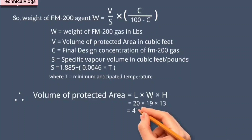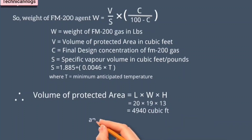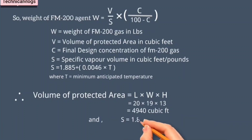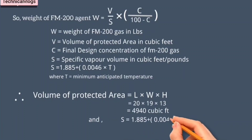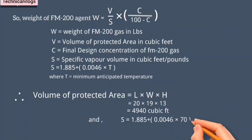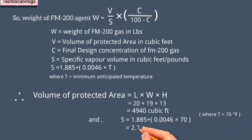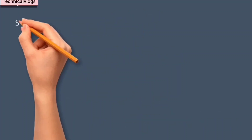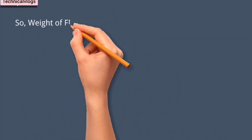Therefore, volume of protected area equals 20 multiplied by 19 multiplied by 13 feet. So V equals 4,940 cubic feet. And specific vapor volume equals 2.207.